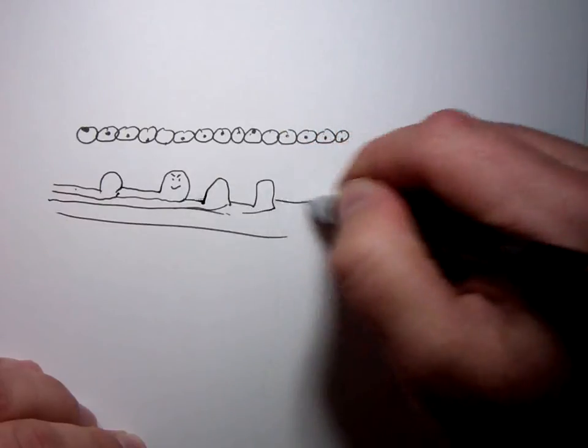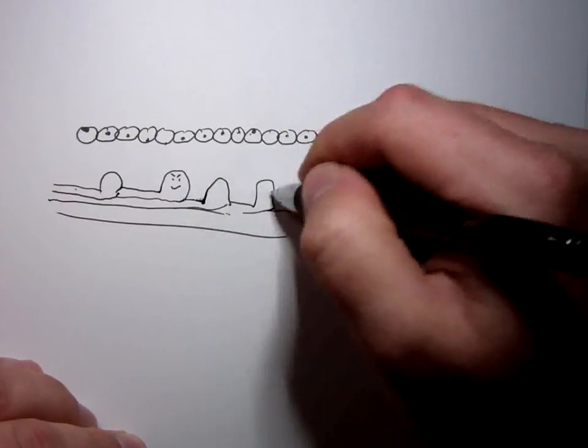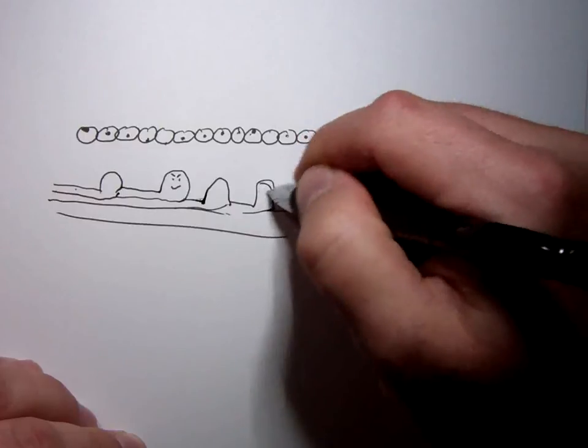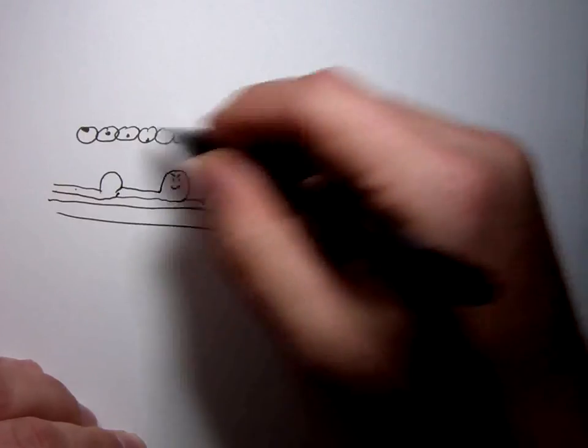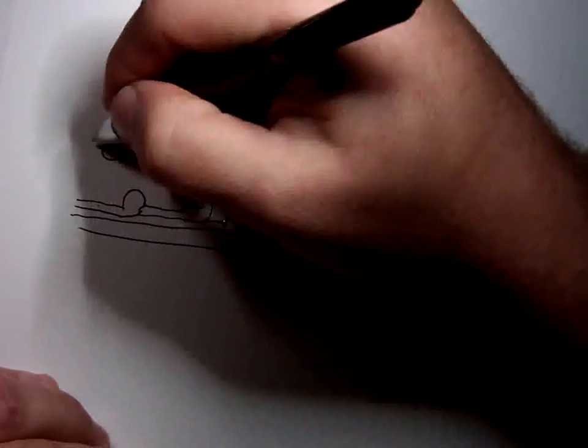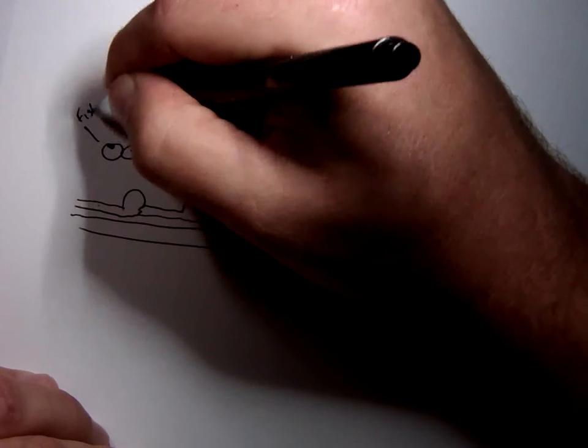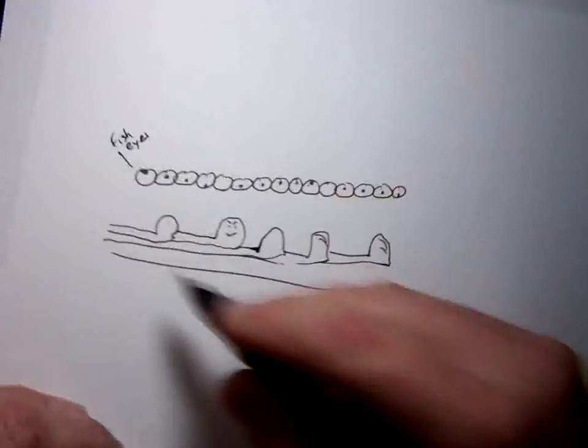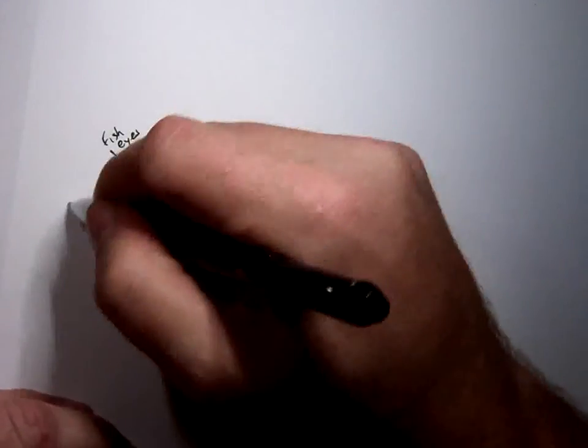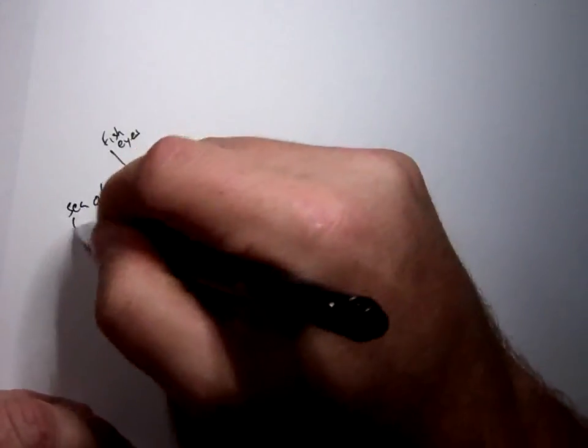And they can attack at any time. These fists are getting terrible looking. They didn't start out great, but... So, what were these things again at the top? Fish eyes. And this was the? Sea of fists.